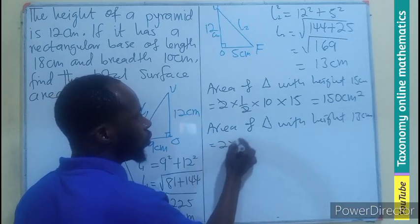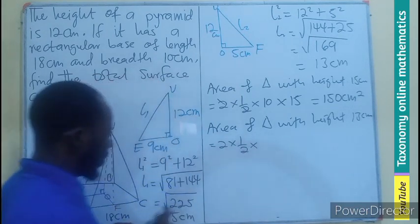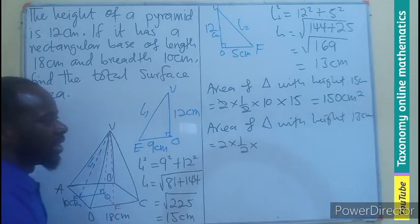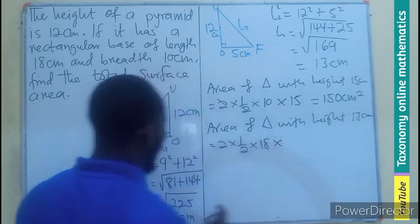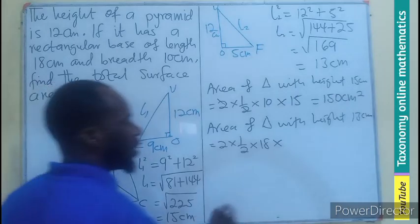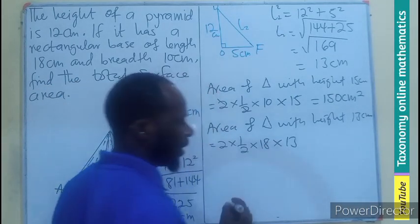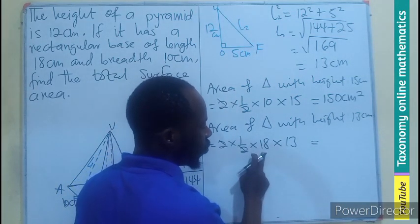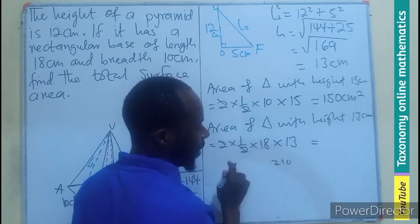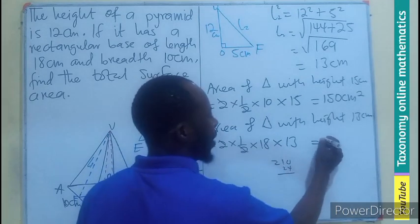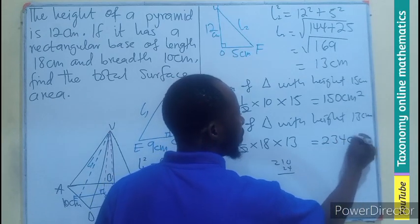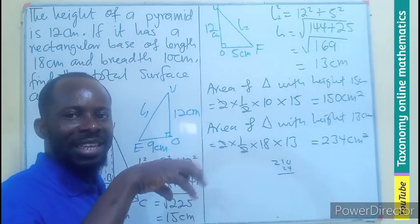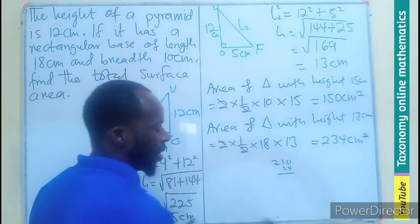For the triangular faces with slant height 13 centimeters — these are triangles VDC and the opposite face — there are also two of them. So it's 2 × (½ × base × height). The base is DC = 18 cm and the slant height is 13 cm. This gives 2 × ½ × 18 × 13 = 234 cm².